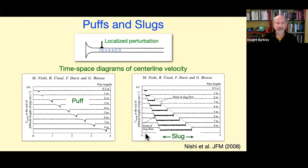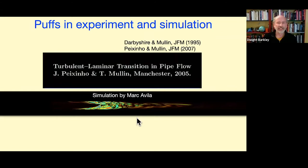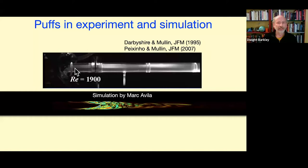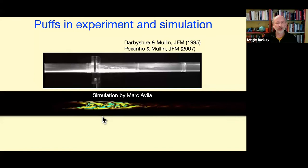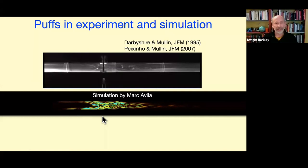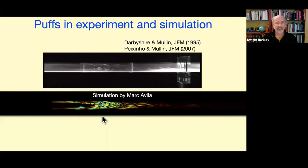I want to show puffs in experiment and simulation, highlighting work from Tom Mullin's lab. At the top is a movie by George Peccino and Tom Mullin: laminar flow in a pipe at Reynolds number 1900, given a kick to form a puff. Below is a simulation by Marc Avila showing streamwise vorticity in the pipe — also a puff, moving downstream. The camera moves with the puff. It moves at roughly constant speed, has constant intensity, constant streamwise length — a pretty much solitary structure as it moves down the pipe.